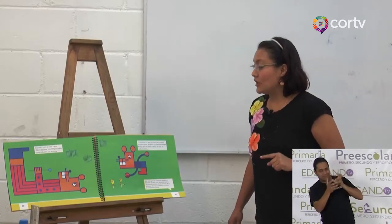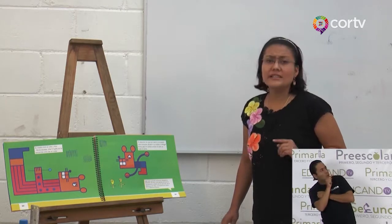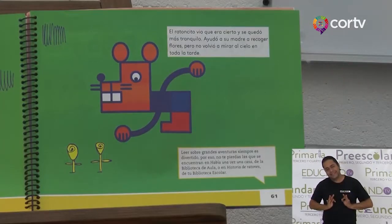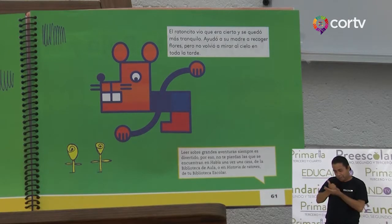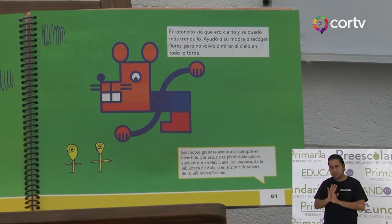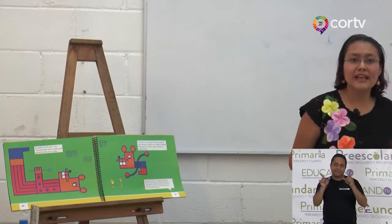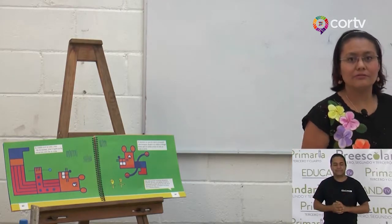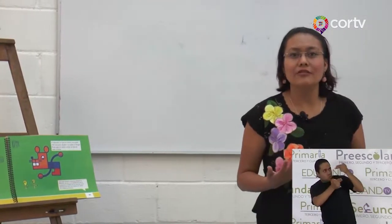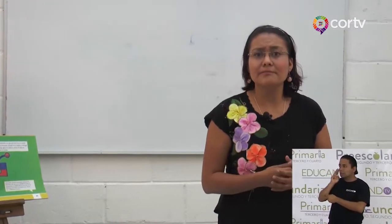El ratoncito vio que era cierto y se quedó más tranquilo. Ayudó a su madre a recoger flores, pero no volvió a mirar al cielo en toda la tarde. Colorín colorado, este cuento se ha terminado. ¿Tú has visto las nubes pasar en el cielo? ¿Qué figuras has observado?